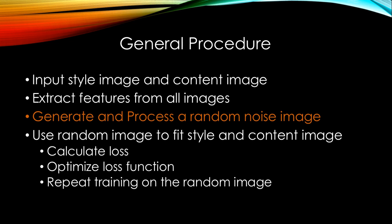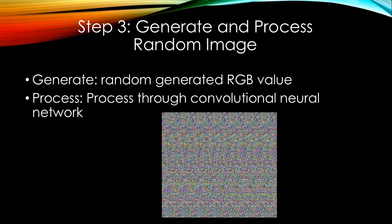To generate the final result, first we need a random image. A random image is just a matrix of the same shape as the content or style image, with randomly generated numbers as its RGB values in each pixel, so you will see a noisy image like this. We also put this image into the neural network to get activations, but of course the activations are just randomly generated nonsense. So we will try to update the random image so that it becomes similar to the content and style image.